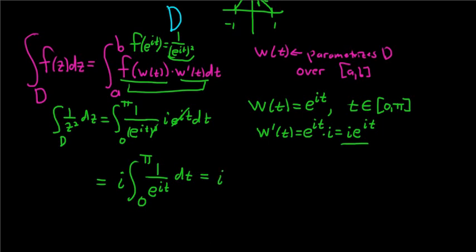So this is equal to i, then we have the definite integral from 0 to pi. You can bring this upstairs, and it becomes e to the negative i t, dt.